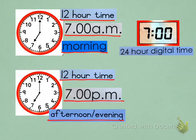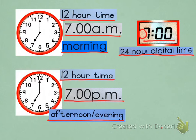Let's look at the first example. In 24-hour digital time it's very similar — almost identical. You will notice we do put a 0 in front of our 7 in digital time. And then also, instead of a full stop which you have in the 12-hour a.m. time, you actually use a colon — two dots like that.